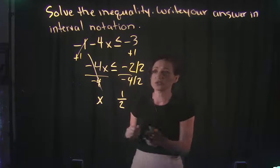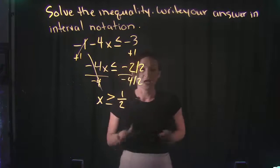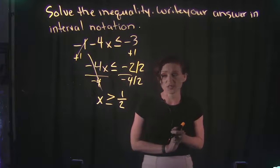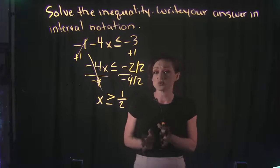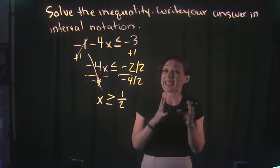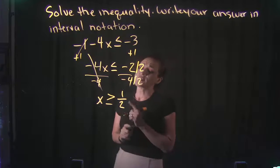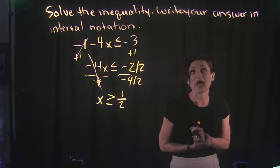So this less than or equal to is now going to become a greater than or equal to symbol. And you only do this when you multiply or divide by a negative. So we're left with x is greater than or equal to 1 half.